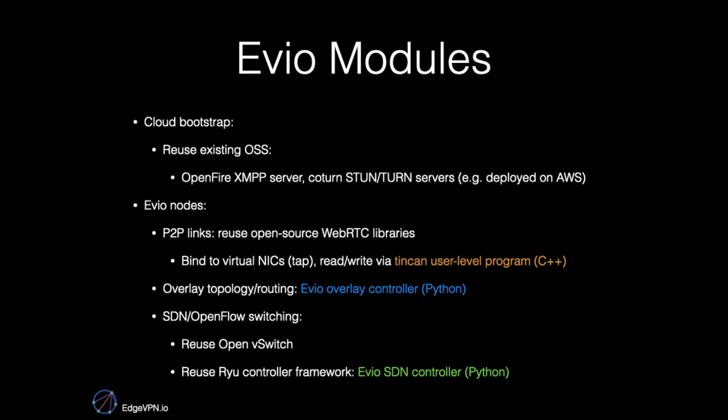For the overlay topology and routing, we use an overlay controller written in Python. This overlay controller also communicates with an SDN controller that sits on top of OpenVSwitch and automatically programs the forwarding rules in the software-defined switches.